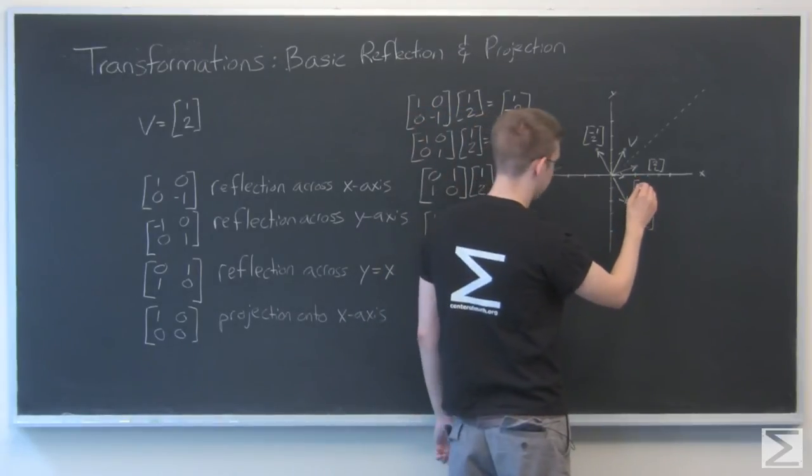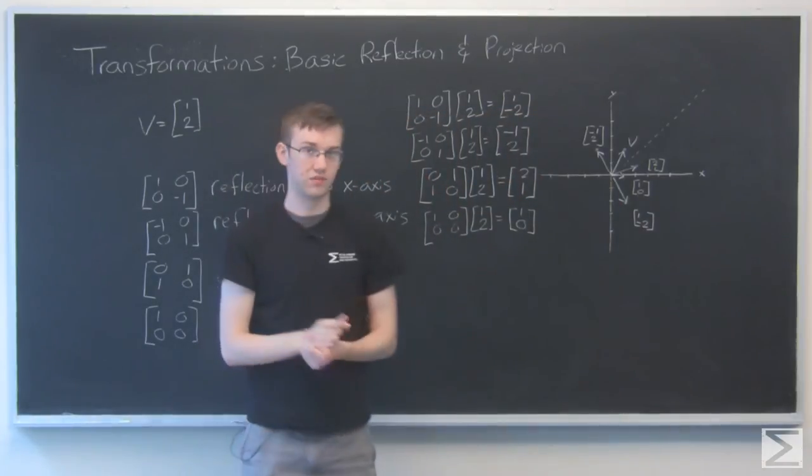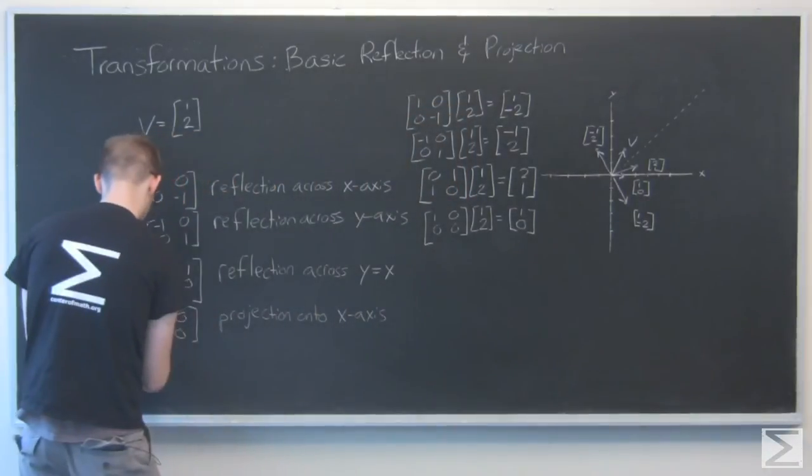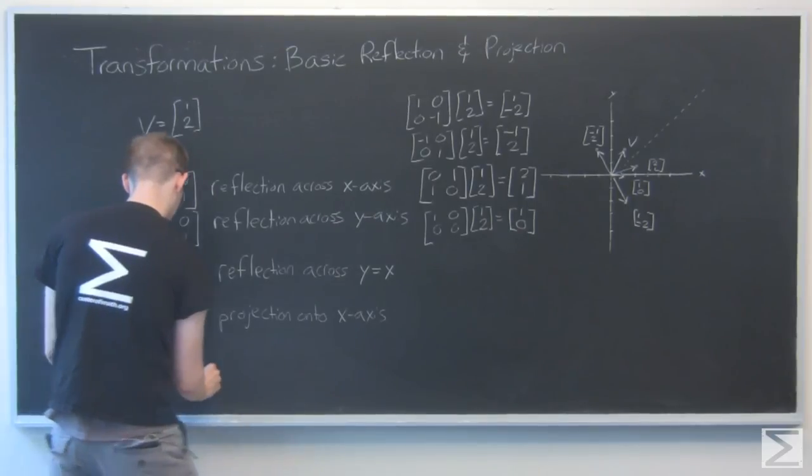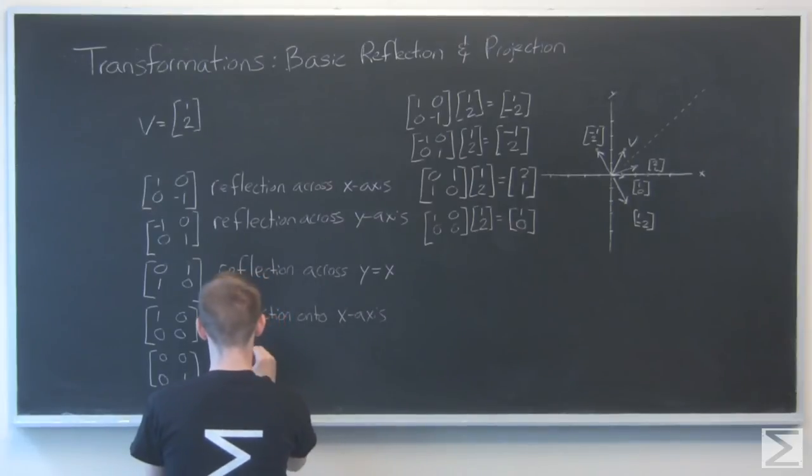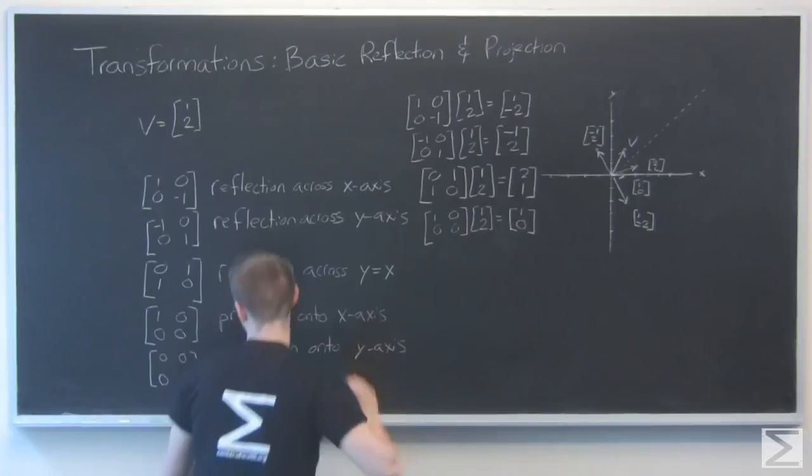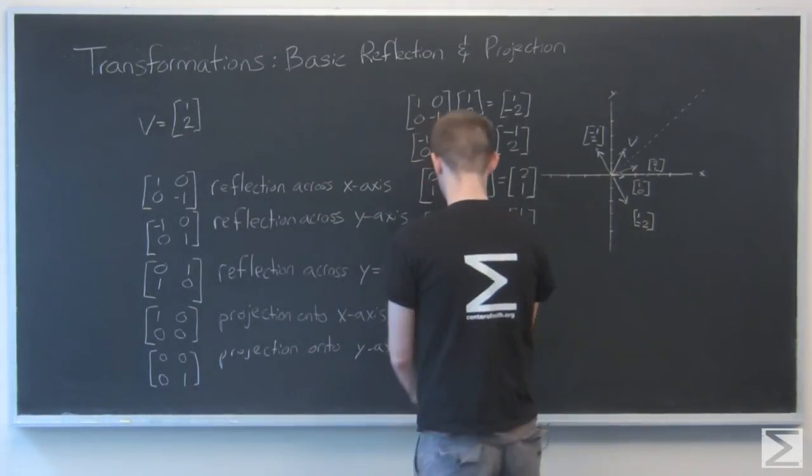And that's basically the shadow cast vertically down by this vector onto the x-axis. Our y is completely gone. We're just left with that little guy. Let's also try projection into the y-axis.